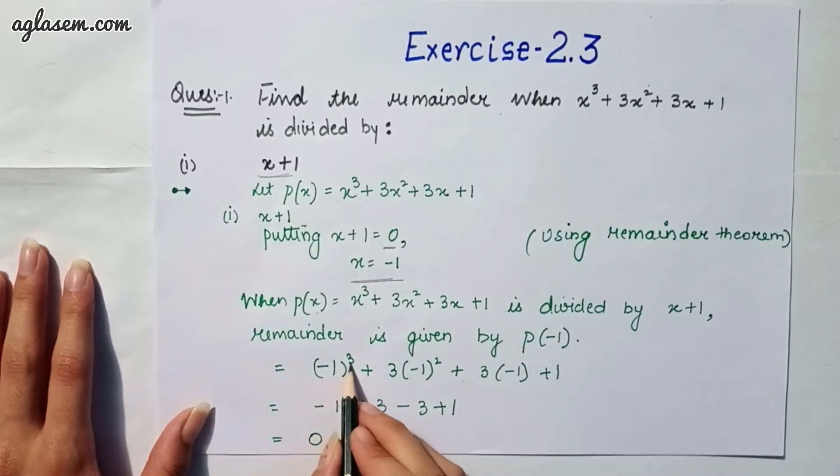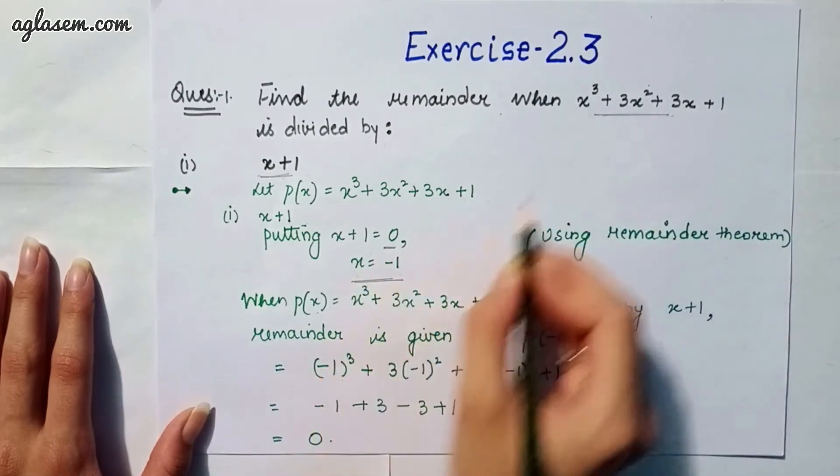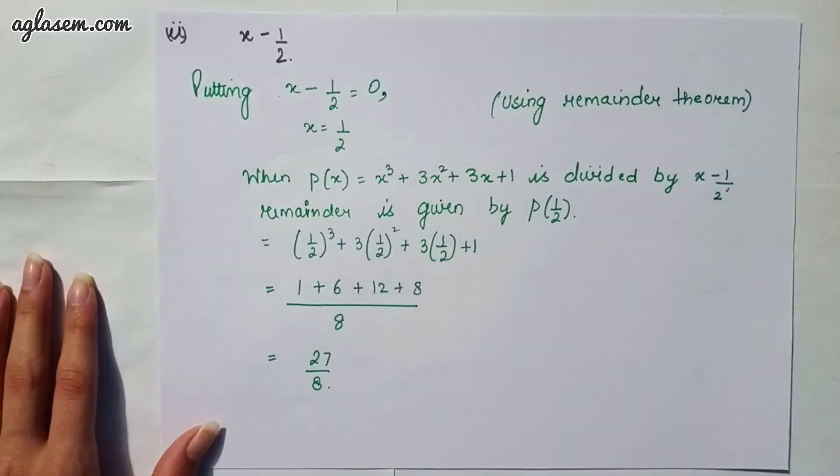We will get (-1)³ + 3(-1)² + 3(-1) + 1. That is, we have to put the value -1 in this equation so that our answer will be 0.